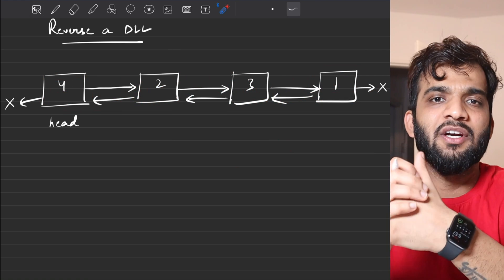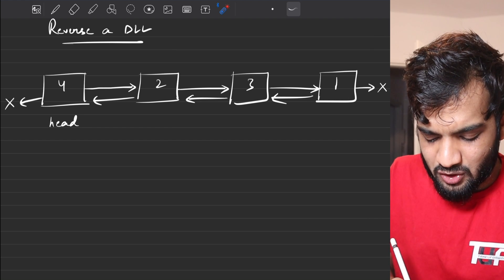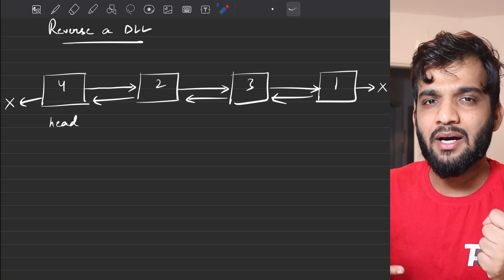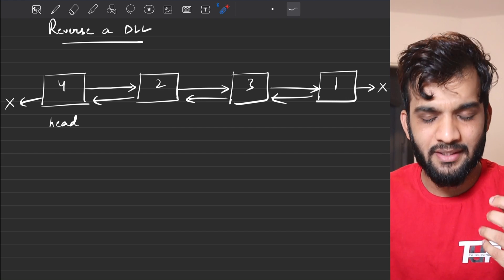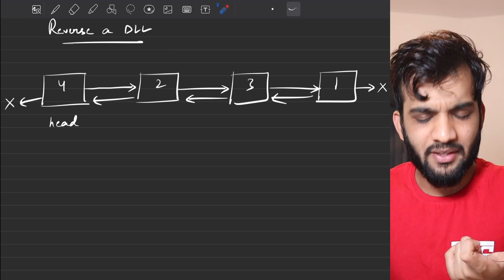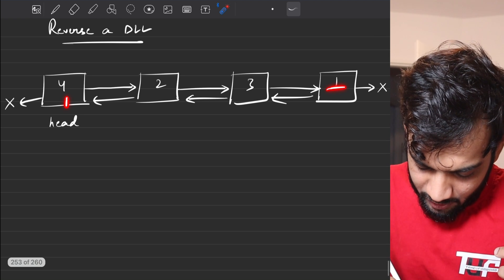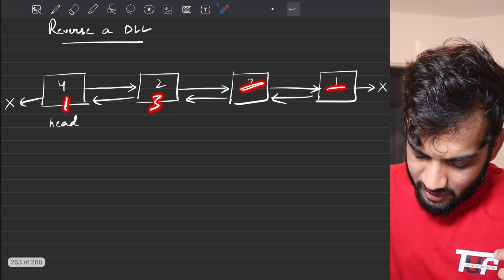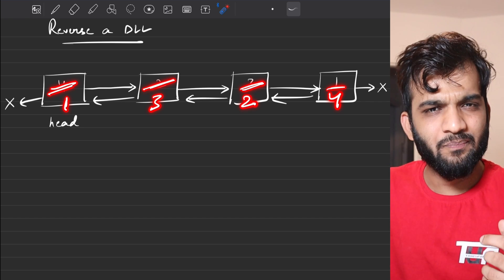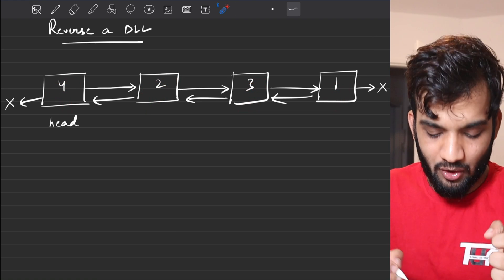If this problem comes up in an interview, what is the extreme naive solution you can think of? We store data in a linked list data structure, so if we can reverse the data, that will work. What if I take element one and put it here, take three and put it here, take two and put it here, take four and put it here? That is the extreme naive solution.